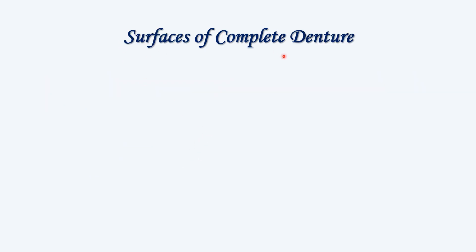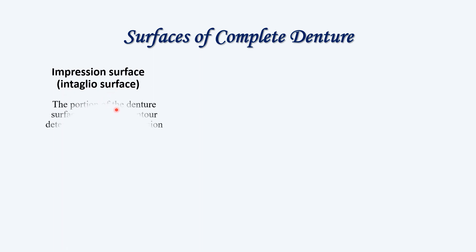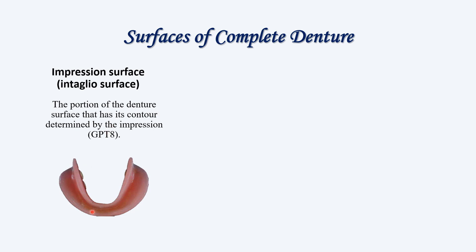Now let's move on to the surfaces of complete denture. There are many different surfaces. The first surface is the impression surface or the intaglio surface. It is that portion of the complete denture that has the contour determined by the impression.